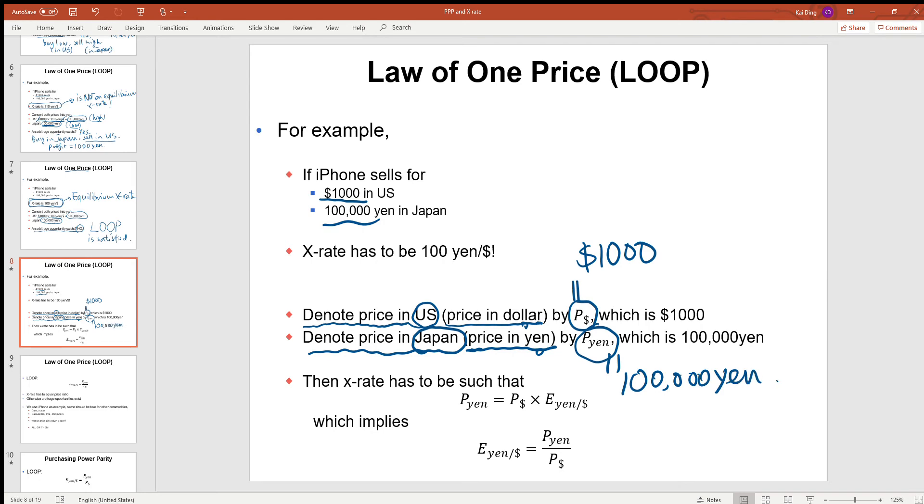With this notation, no arbitrage opportunity or law of one price implies when we convert the two prices into the same units, for example Japanese yen, they have to be converted into the same Japanese yen. So in Japan, the price is already in yen, so the price is just P yen, a hundred thousand yen.